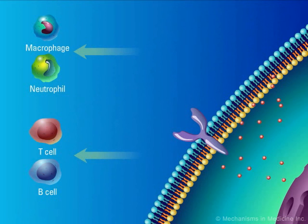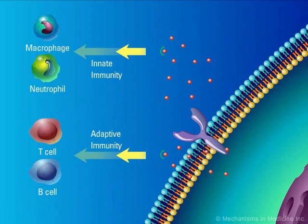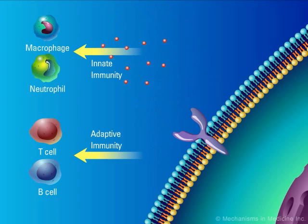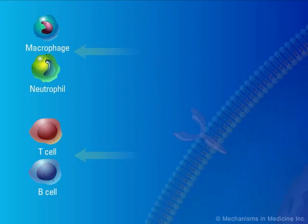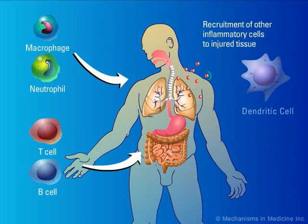Macrophages, neutrophils, and lymphocytes are activated by signals from cytokines and chemokines. Immune cells are recruited to the area of infected and damaged tissue.